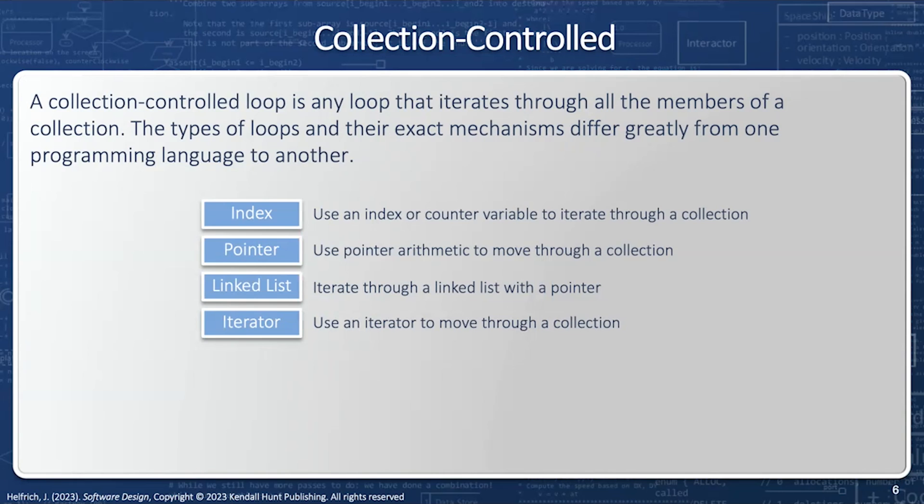Next, we have an iterator. An iterator is an abstraction of many different loop types that allows the user to use the same loop body to go through a collection, regardless of how the collection is implemented. In other words, I can have a linked list or a binary tree or an array, and to the user, the iterator works exactly the same.